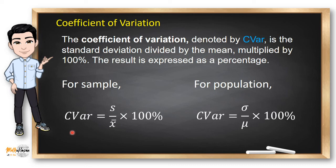For the sample, we use CVAR equals s, which stands for the standard deviation of the sample, and x̄, which is the mean of the sample, times 100%. For the population, we have CVAR equals σ divided by μ. Sigma represents the population standard deviation, and μ represents the mean of the population, times 100%.